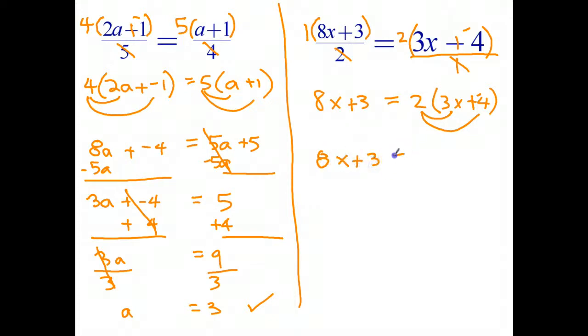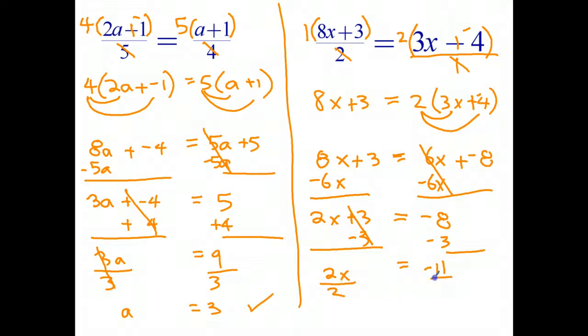Subtract six X from both sides. And that goes to zero, leaving just the negative eight. Eight X take six X is two X plus three. Equals negative eight. Subtract three from both sides. And they cross out. And I'm left with two X equals negative 11. Divide both sides by two. And X equals negative 11 halves or as a mixed number negative five and a half.